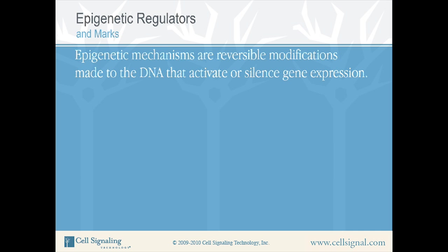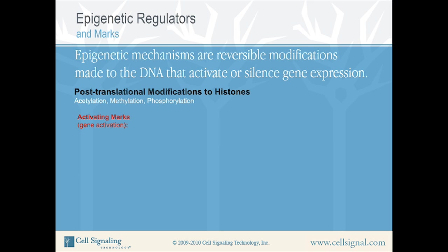Examples of these epigenetic mechanisms that lead to chromatin remodeling are post-translational modifications to histones, such as acetylation, methylation, phosphorylation, as well as methylation of CpG nucleotides. Epigenetic mechanisms resulting in gene activation are called activating marks, and those that result in gene silencing are considered repressive marks.